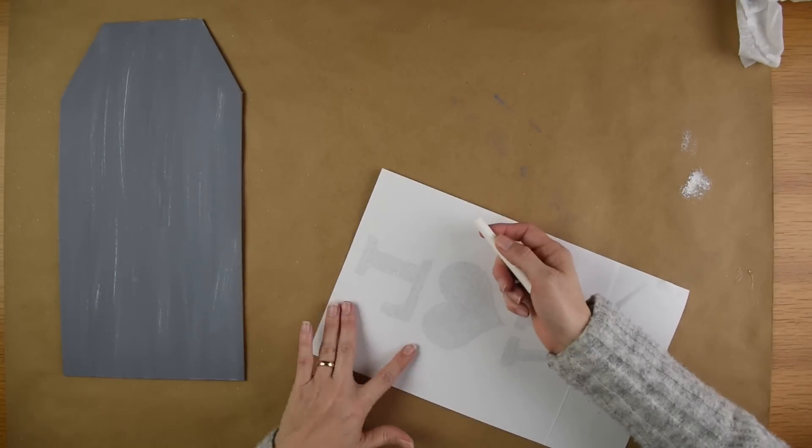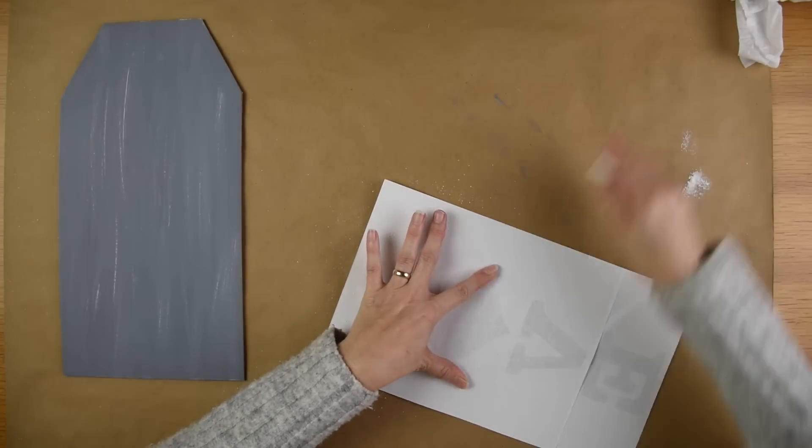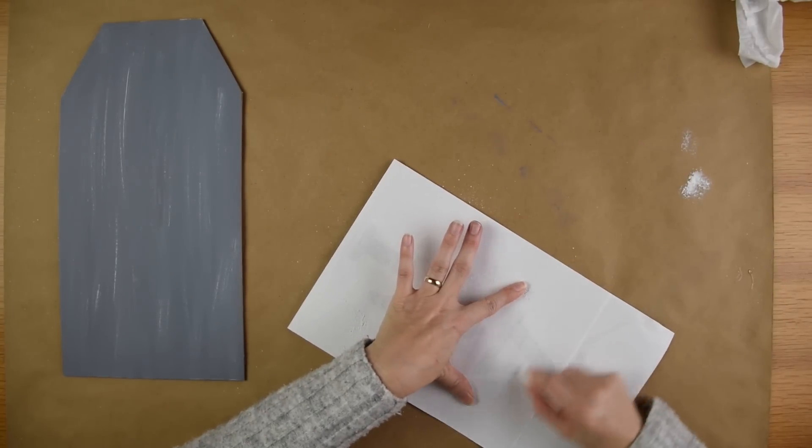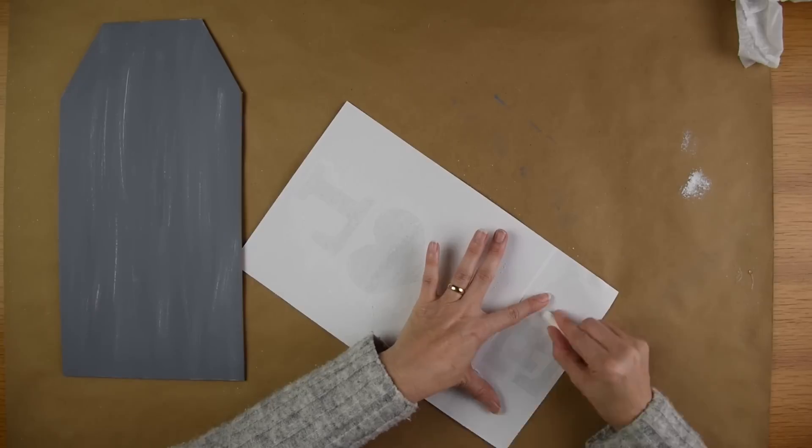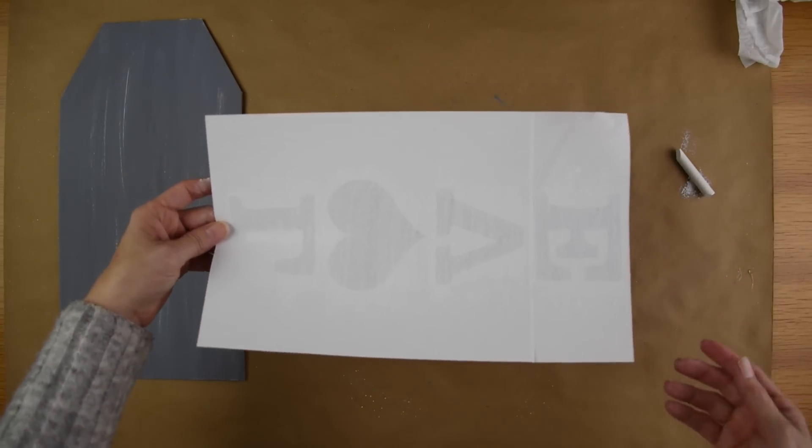Now I'm going to take that love printout, turn it over and take my chalk and run that along the back side of my image. I am making sure that I get it all over each letter and the heart. I have a lot of the chalk shavings so I'm just going to dump that into the trash.